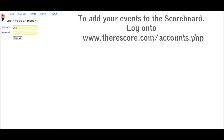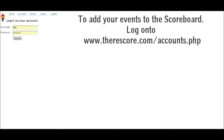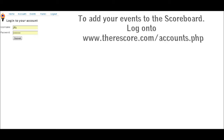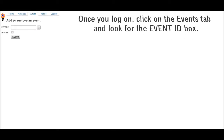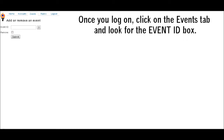To add your events to the scoreboard, log on to www.theirscore.com. Once you log on, click on the Events tab and look for the Event ID box.